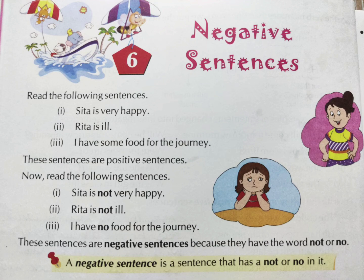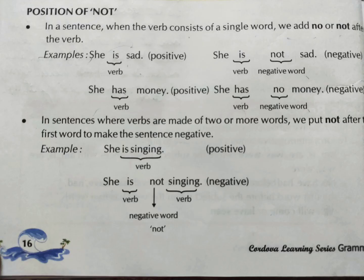Now let us study them in a bit more detail. Position of 'not': when the verb consists of a single word, we add 'not' or 'no' after the verb. For example, 'She is sad' — 'is' is the verb, so you add after the verb: 'She is not sad.' Similarly, 'He has money' — 'has' is the verb — becomes 'She has no money.'